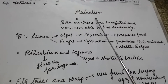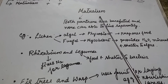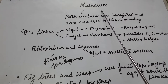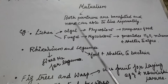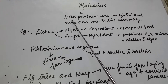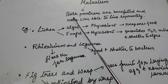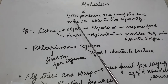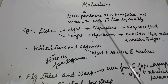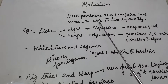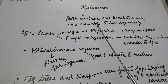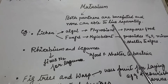Now the last population interaction is mutualism. This is the interaction between two organisms of different species where both partners are benefited and none of the two are capable of living separately.